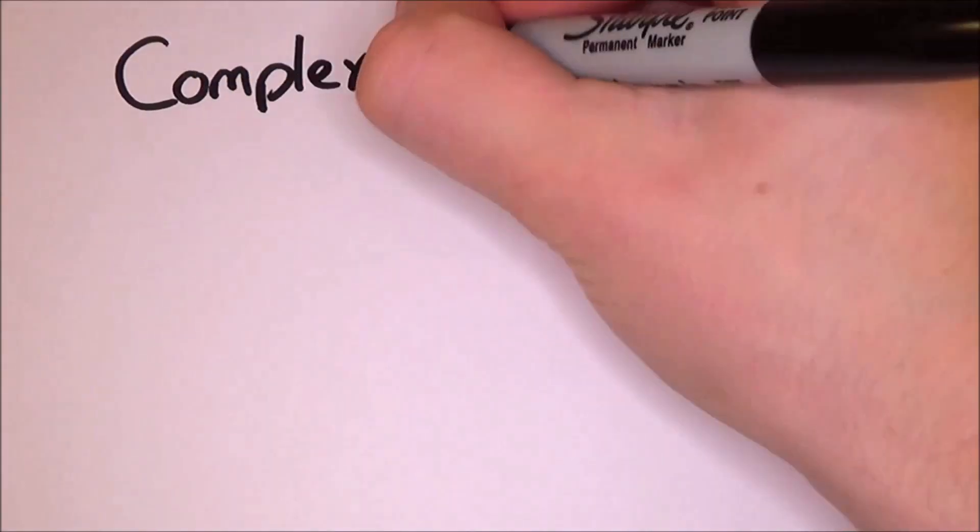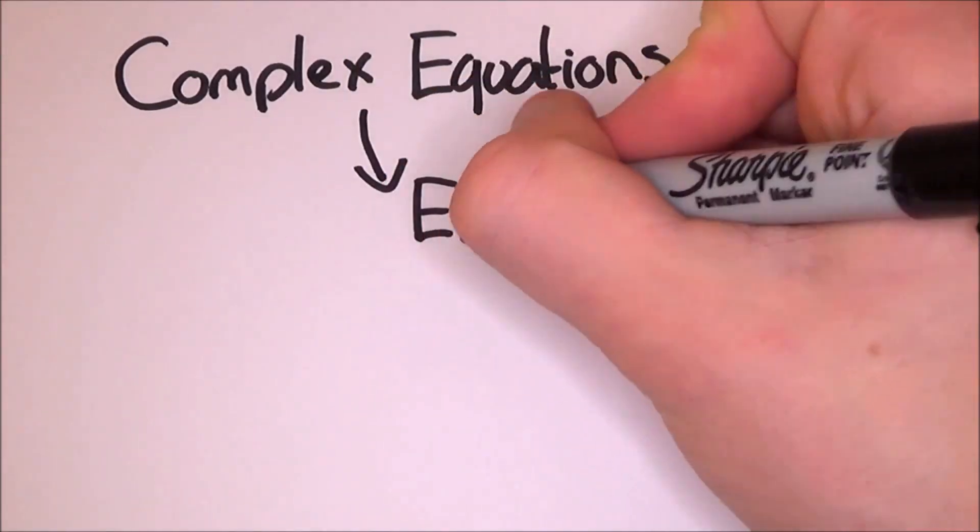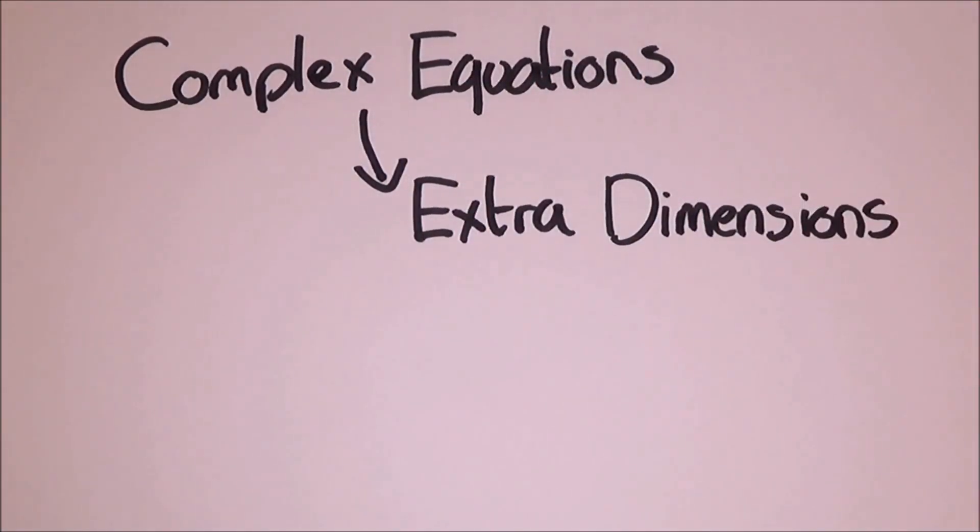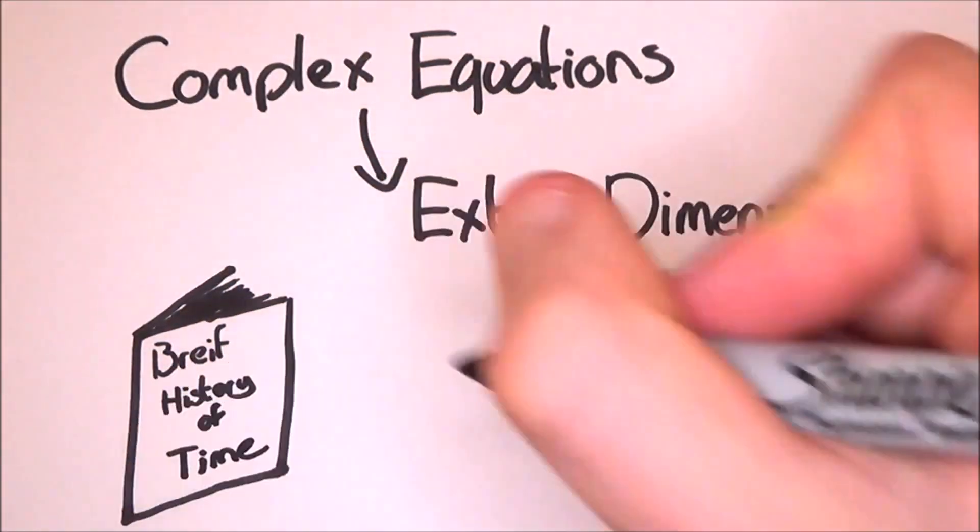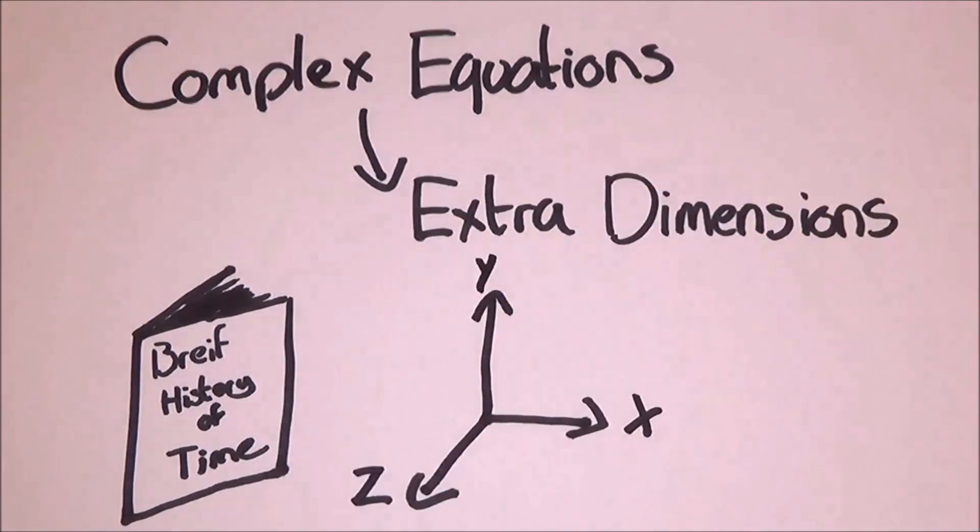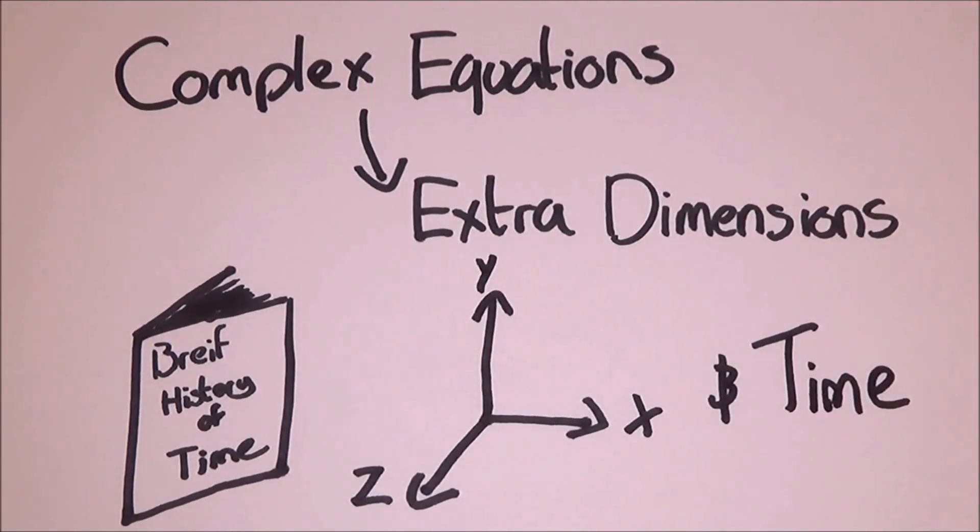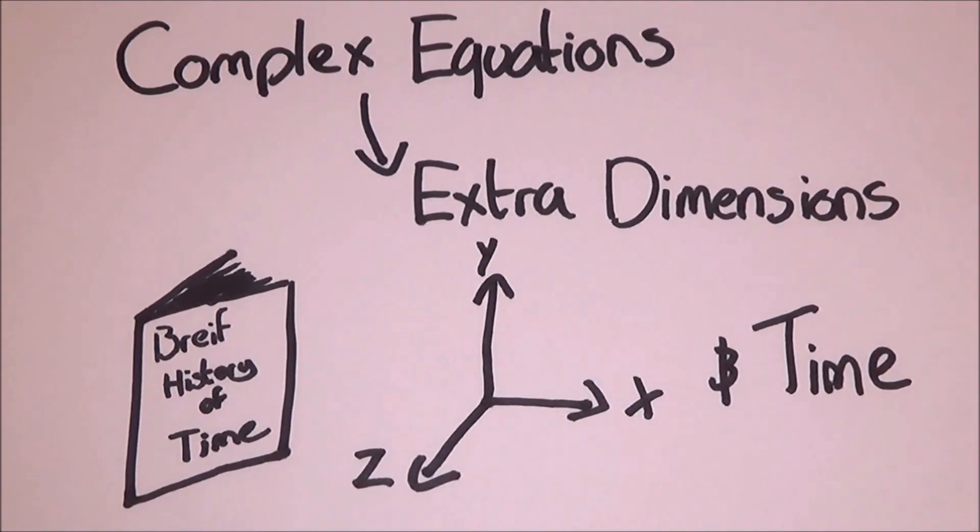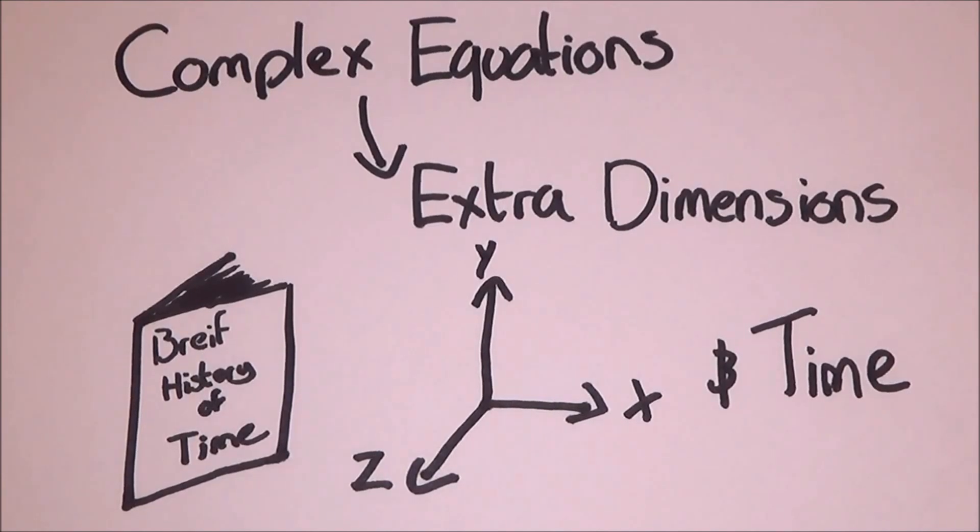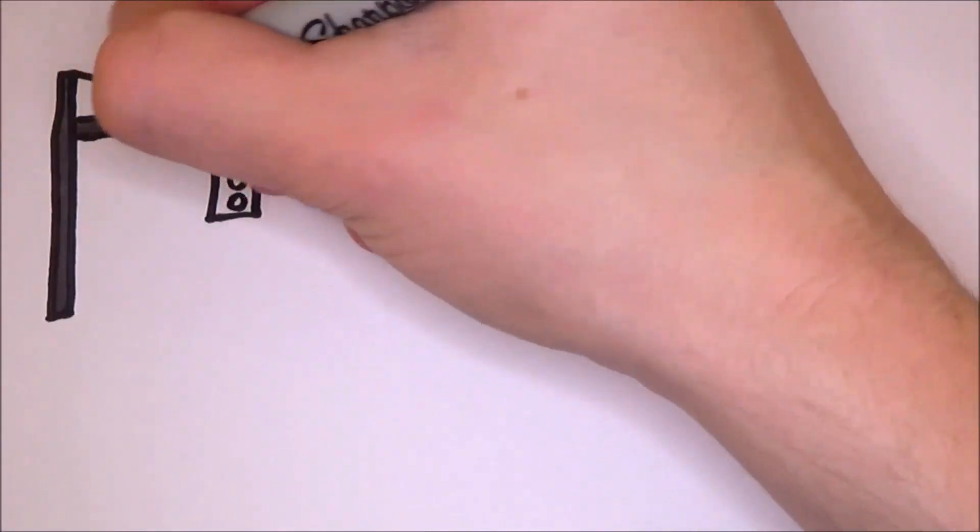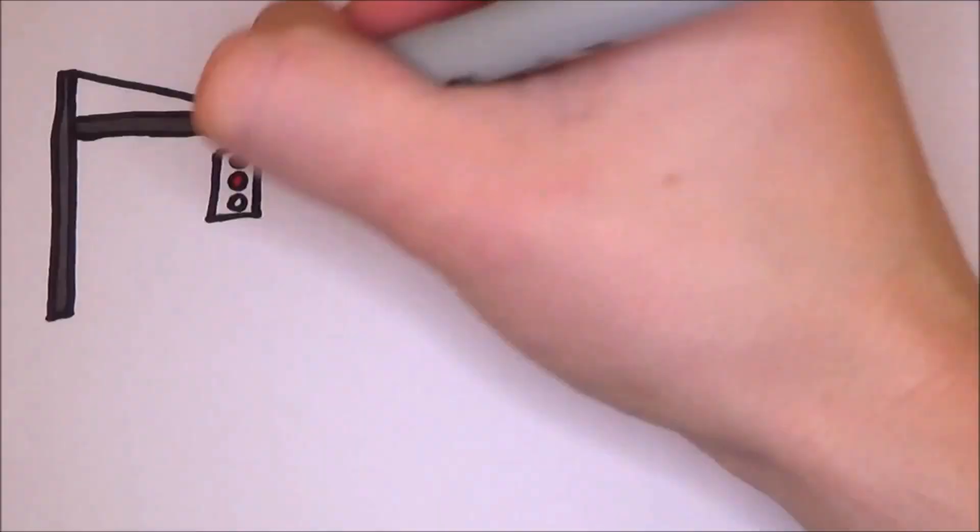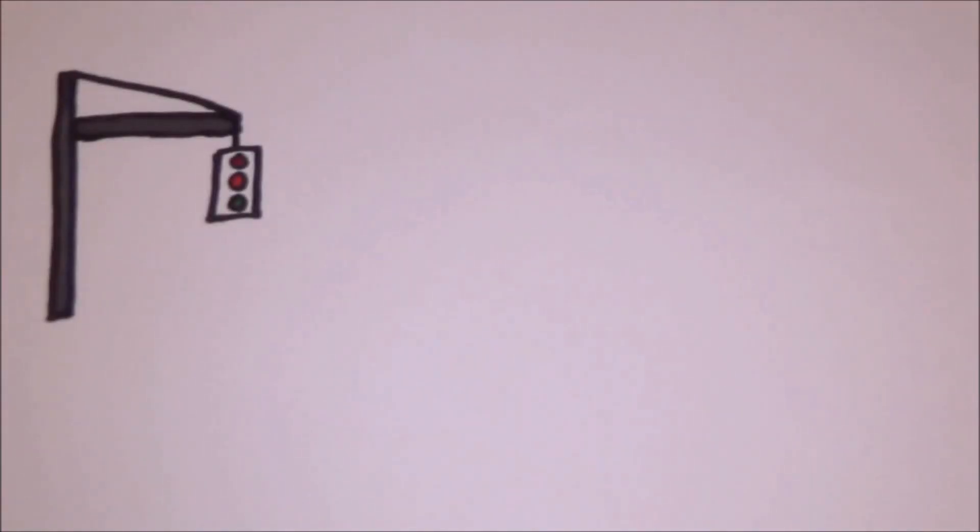To make everything better, the complex equations require something that people struggle to get in their heads: extra dimensions of space. Even Stephen Hawking said in his book, A Brief History of Time, that he struggles to see in three dimensions and that is the one we live in. We have thought for centuries that there is only what we can see, three dimensions of space and one dimension of time, and anyone who suggested more was labelled crazy. But string theory goes all in and predicts it. But to make this claim, scientists had to explain how they could even make the claim.